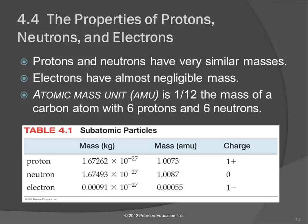The protons and the neutrons have very similar masses. They're essentially the same size. If we look at this table, we see that a proton has a mass of 1.67262 times 10 to the minus 27 kilograms. And the neutron is almost the same.